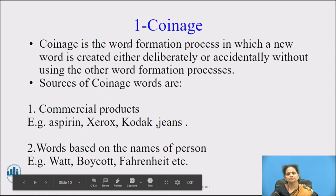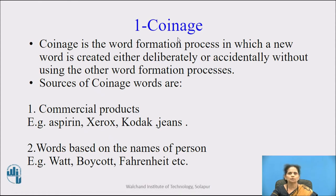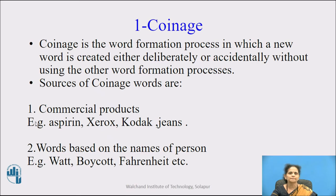Now let us see the first type of word formation — coinage. Coinage is the word formation process in which a new word is created either deliberately or accidentally without using the other word formation processes. The sources of coinage words: the first source is commercial products, and the examples are aspirin, xerox, and kodak.